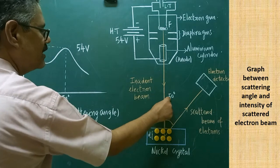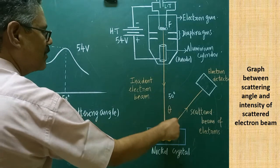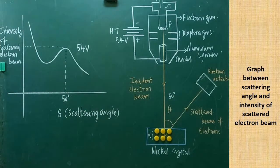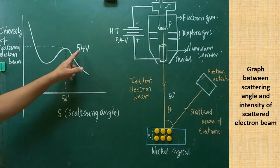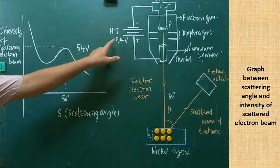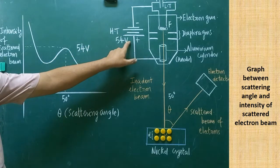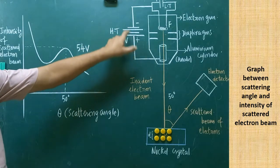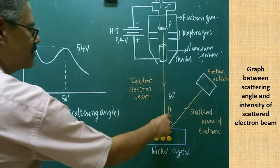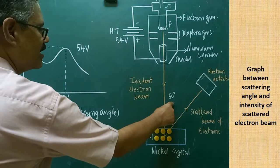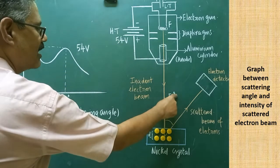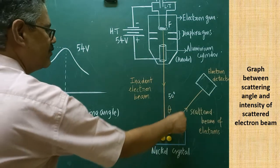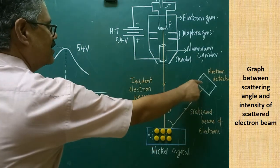At 50 degrees, maximum intensity electrons can be obtained. So note these two values: 54 volts is applied between cathode and anode, and for this accelerating potential, the scattering angle is 50 degrees — at 50 degrees we are able to get the maximum intensity electron.